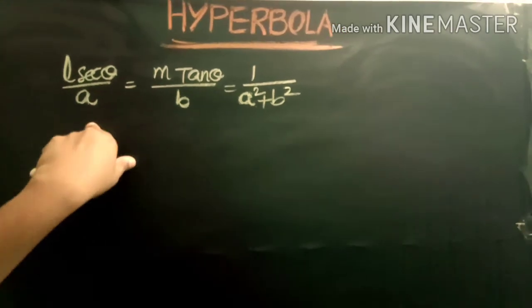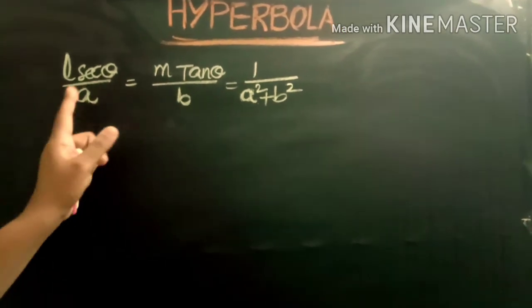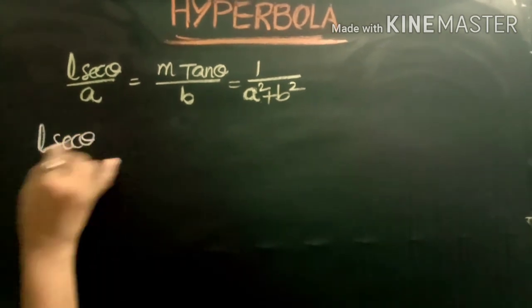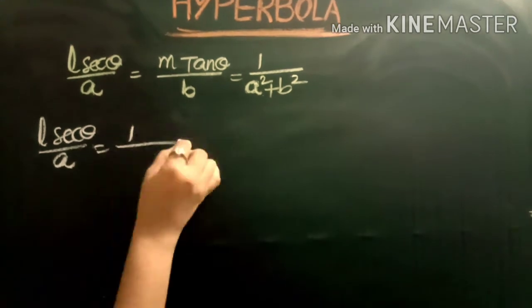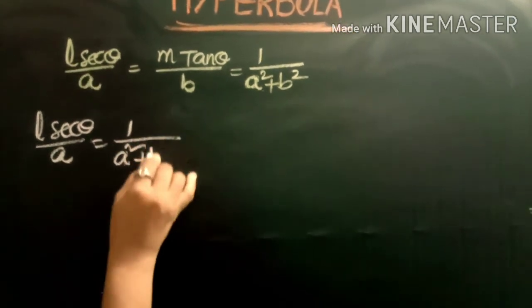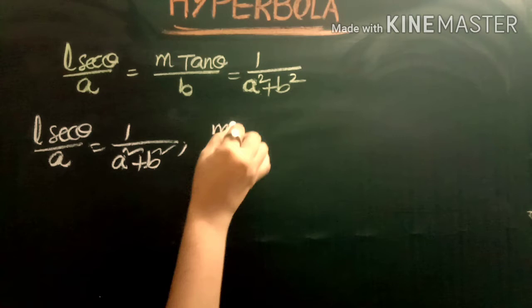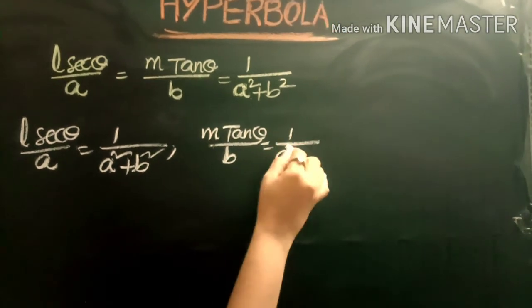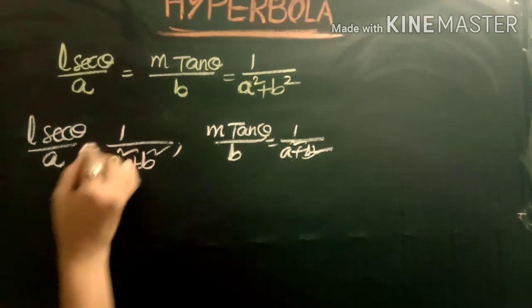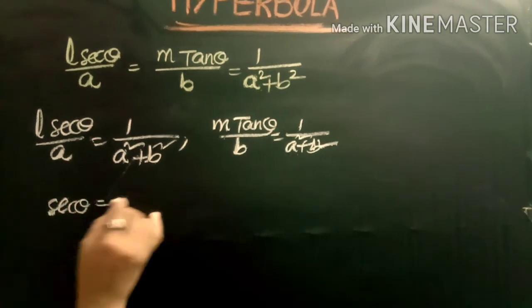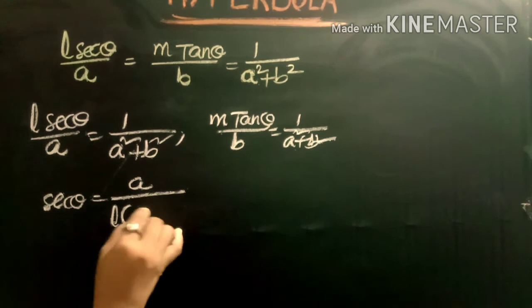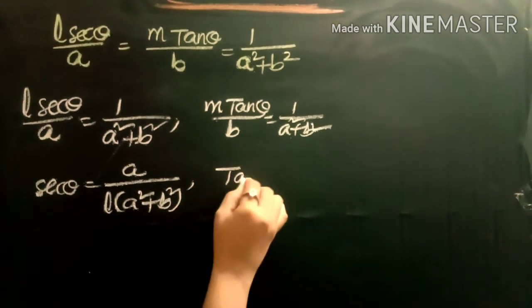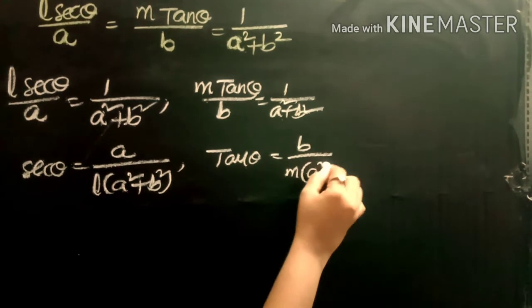To find the values of sec θ and tan θ, we equate each ratio to the last term: l·sec θ / a = 1 / (a² + b²), giving sec θ = a / (l(a² + b²)); and m·tan θ / b = 1 / (a² + b²), giving tan θ = b / (m(a² + b²)).